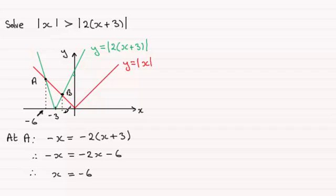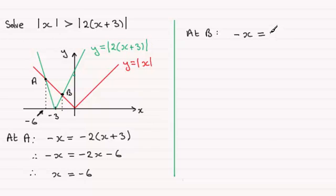Now we need to get the value of the x coordinate at b. At b we're looking for the intersection of the red graph, this part of the red graph which is y equals minus x equaling this section of the green graph. And this one is the positive version. So that's going to be 2 lots of x plus 3.